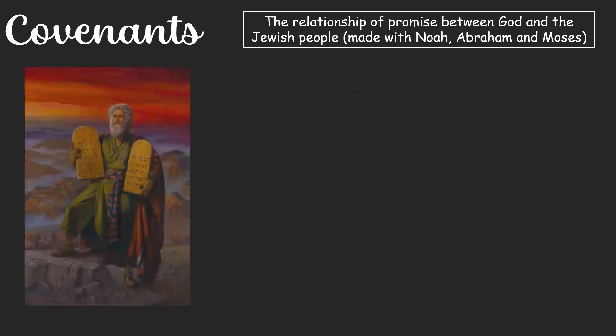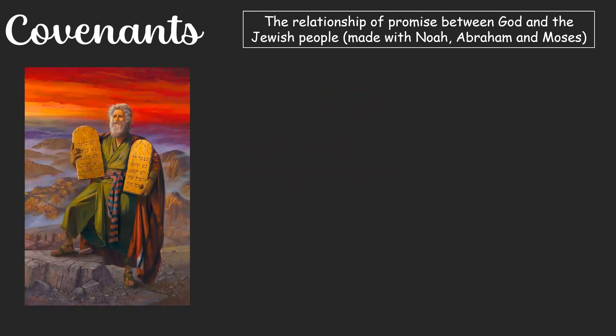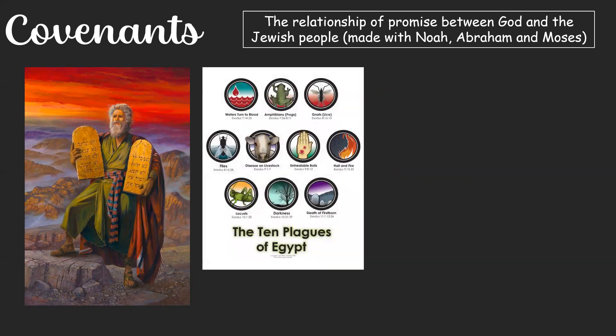In Exodus, Moses is a Jew who grew up in the Egyptian palace. God spoke to Moses through a burning bush and Moses was told to ask Pharaoh to free the Israelite slaves. When the Pharaoh refused, God sent 10 plagues. The last of these was the death of the firstborn, and this is where the festival of Passover originates. The Israelites were then able to escape from Egypt.